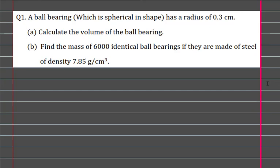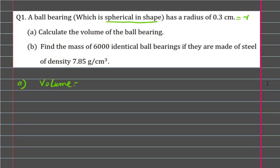Question number one: a ball bearing which is spherical in shape has radius r equal to 0.3 centimeters. Part a: calculate the volume of ball bearing. Since the ball bearing is in the shape of a sphere, the volume of ball bearing is the volume of sphere, and the formula is 4 over 3 pi r cubed.